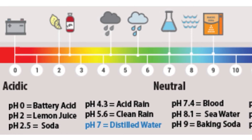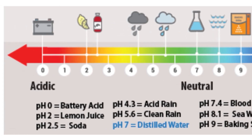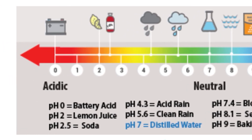So looking at the examples in this photo, acid rain with a pH of 4.3 is over 10 times more acidic than clean rain, which has a pH of 5.6.